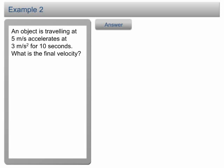Let's list down all the information given. Initially, the object travels at 5 m per second. It is then accelerates at 3 m per second square for 10 seconds. We are asked to find the final velocity. Let's also write down all the four equations of uniform acceleration.